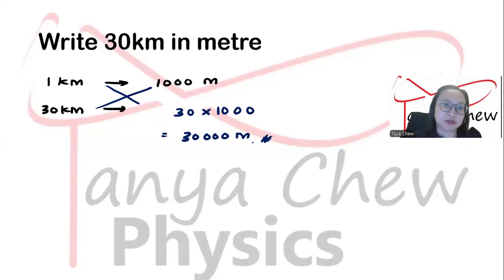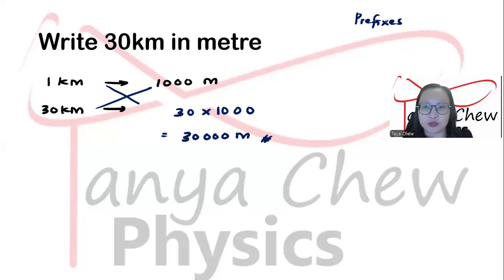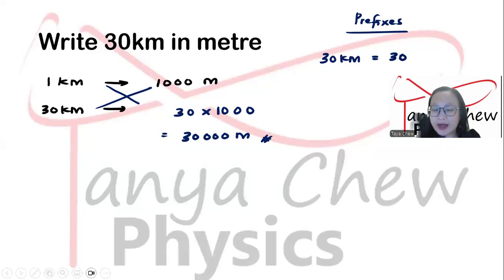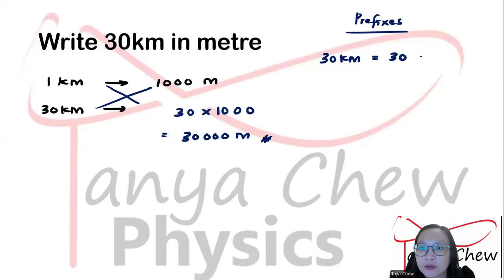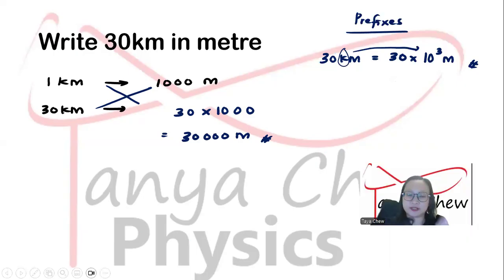We also have the physics method using prefixes. Prefixes denote very large or very small numbers as powers of 10. Kilo is one of the prefixes, carrying the value of 1 × 10³. So 30 kilometers equals 30 with kilo replaced by 10³, times meter — giving 30 × 10³ meters. Using prefixes is actually easier. Both methods give you the same answer.